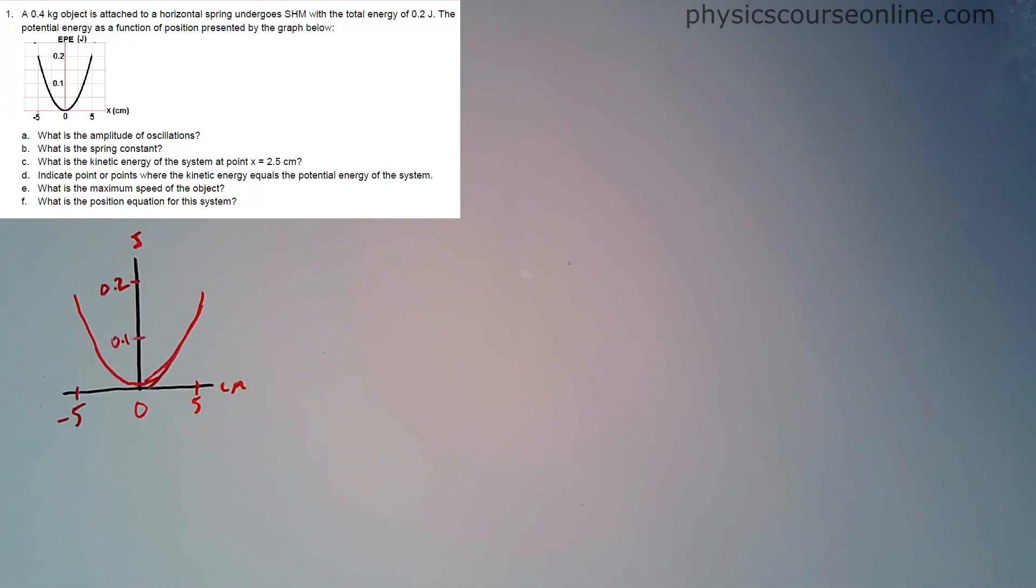Let's go through this short response worksheet. I've got number one here. I've already redrawn the chart here so I can point to it a little easier. We've got a 0.4 kilogram object on a horizontal spring undergoing SHM. We know the total energy of the system is 0.2 joules. We know the potential energy as a function of position is represented below. We want to know the amplitude of the oscillations and a bunch of other stuff.